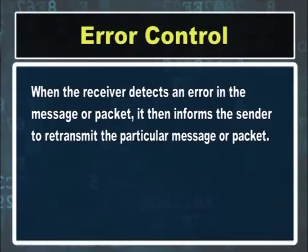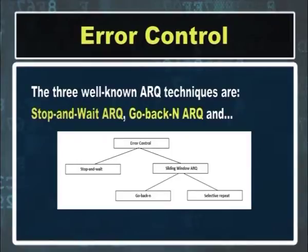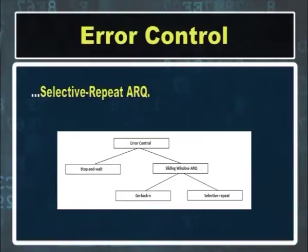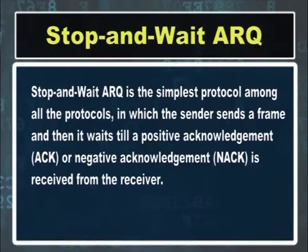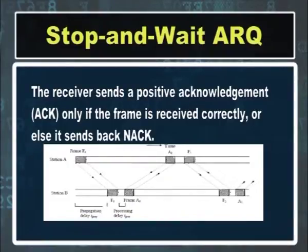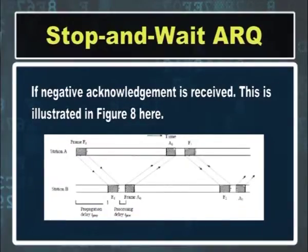Next we discuss the third function — error control of the data link layer. When the receiver detects an error in a message or packet, it informs the sender to retransmit that particular message or packet. The most popular retransmission scheme is known as Automatic Repeat Request, or ARQ. The three well-known ARQ techniques are stop-and-wait ARQ, go-back-N ARQ, and selective repeat ARQ. Stop and wait ARQ is the simplest protocol, in which the sender sends a frame and then waits for a positive acknowledgement or negative acknowledgement from the receiver. The receiver sends a positive acknowledgement only if the frame is received correctly, otherwise it sends back a negative acknowledgement.